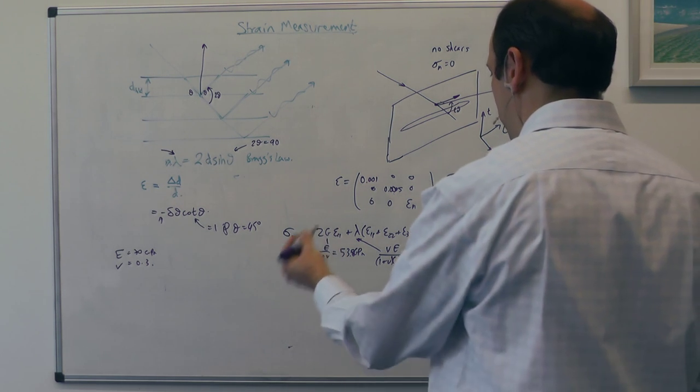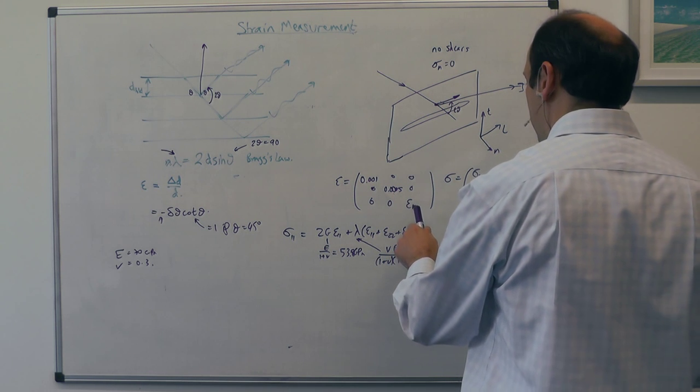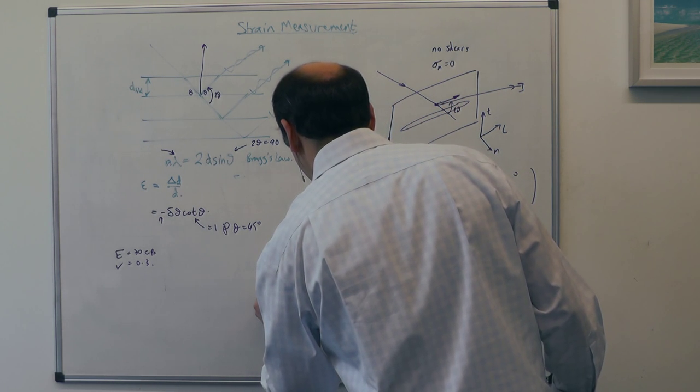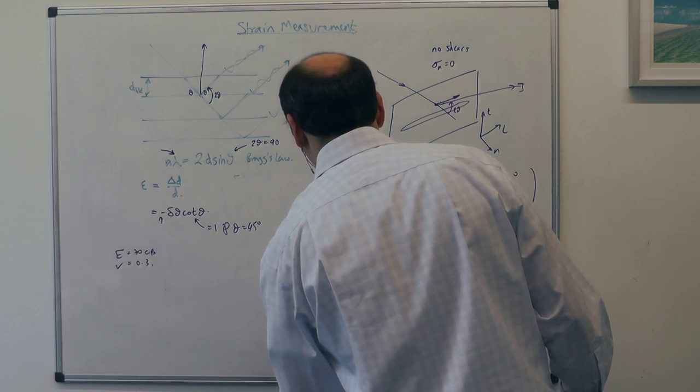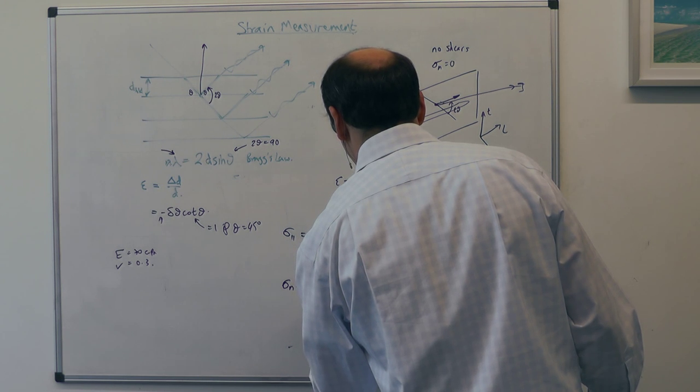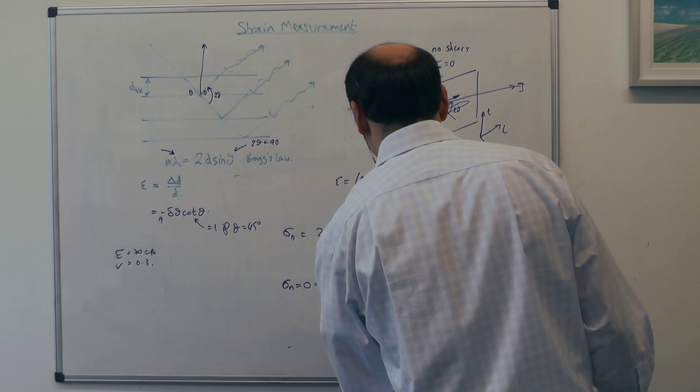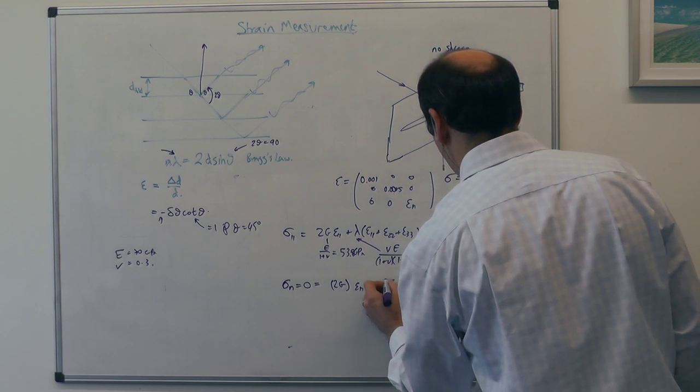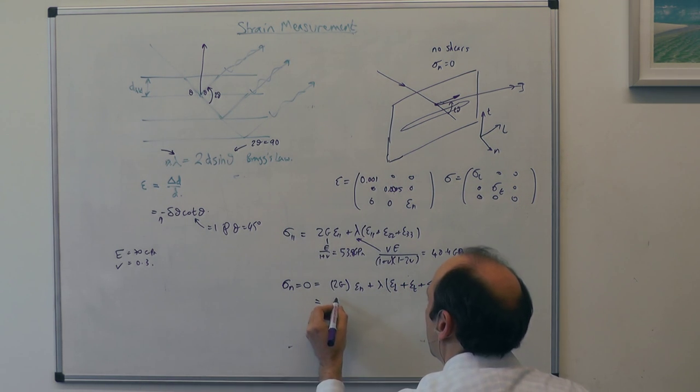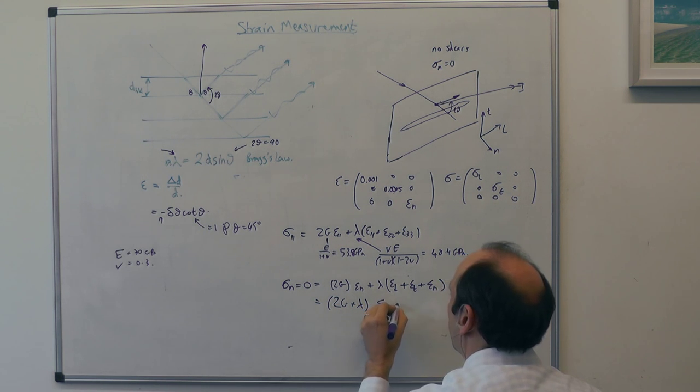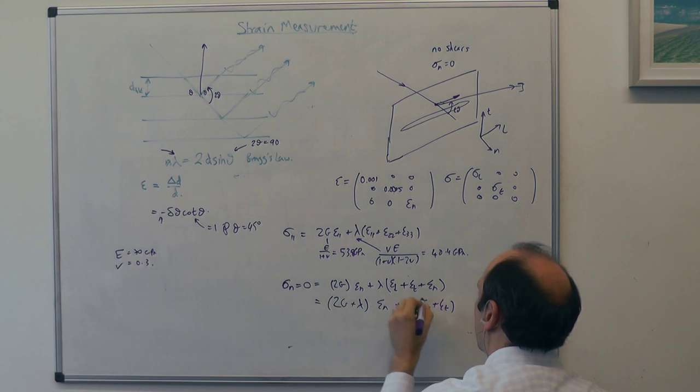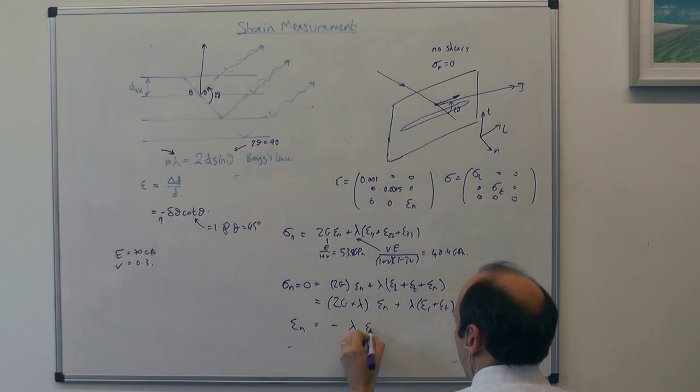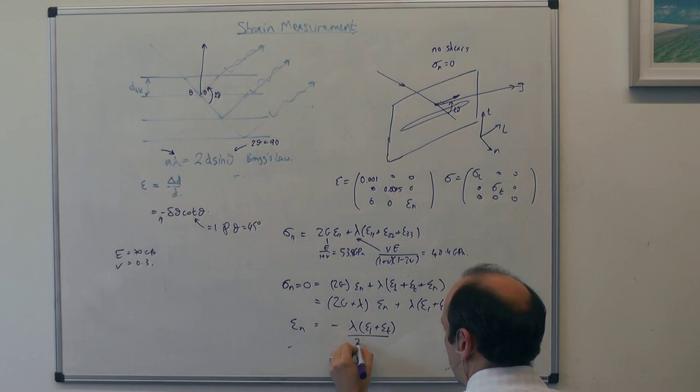So then we now need to work out what the sigmas are. Now the thing to notice is we don't know ε normal, so we don't know it in there, so we can't work out any of the sigmas. But if we take the third one, so σ normal, which is equal to 0, that's equal to 2G times ε normal plus λ(ε long + ε trans + ε normal). So that's equal to, if we come down here, (2G + λ)ε normal + λ(ε L + ε T). So we can work it out.